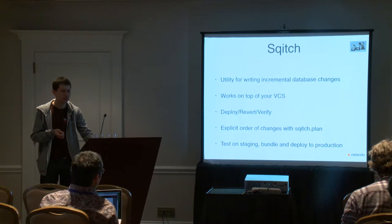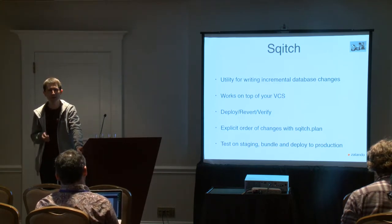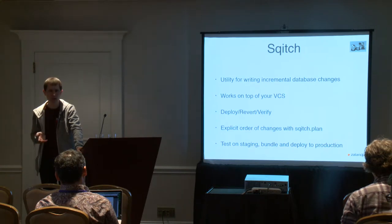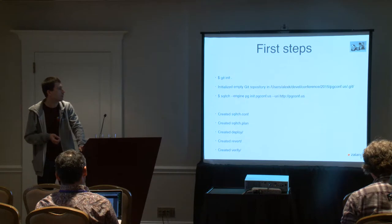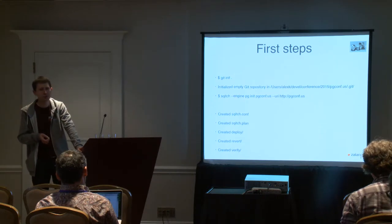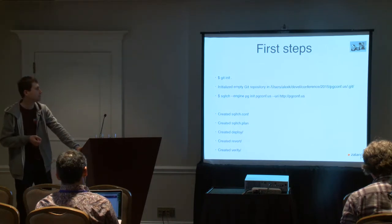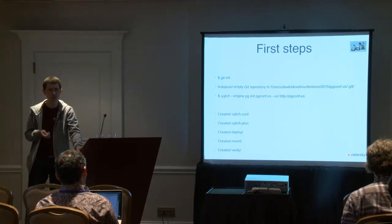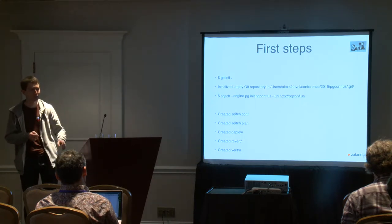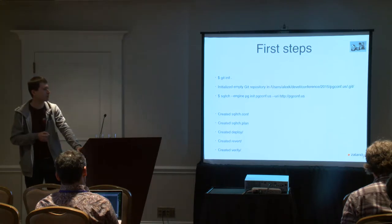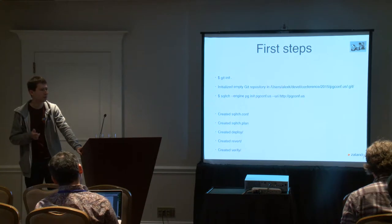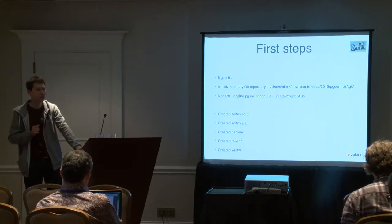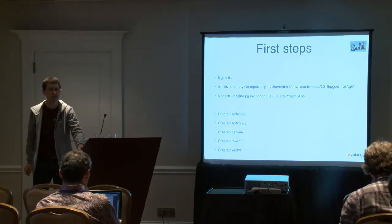Here's how Sqitch works. You initialize a new Git repository, then run Sqitch init specifying the engine as Postgres, the project name, and a URI — which allows multiple projects with interdependencies. It creates a configuration file for the database connection string, a Sqitch plan showing execution order, and three directories containing actual changesets. Each change is always inside a transaction, guaranteeing it's either applied completely or not at all. There's a simple statement — for example, creating a role — with Sqitch adding metadata comments indicating which deployment it is.